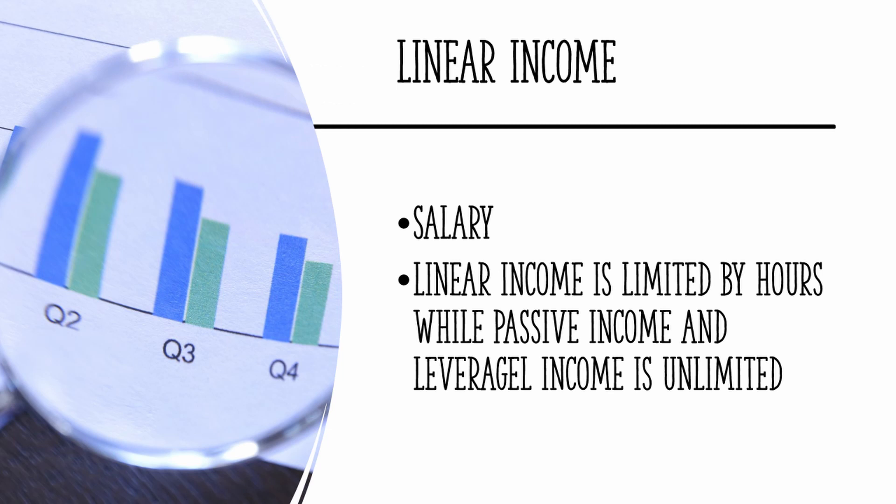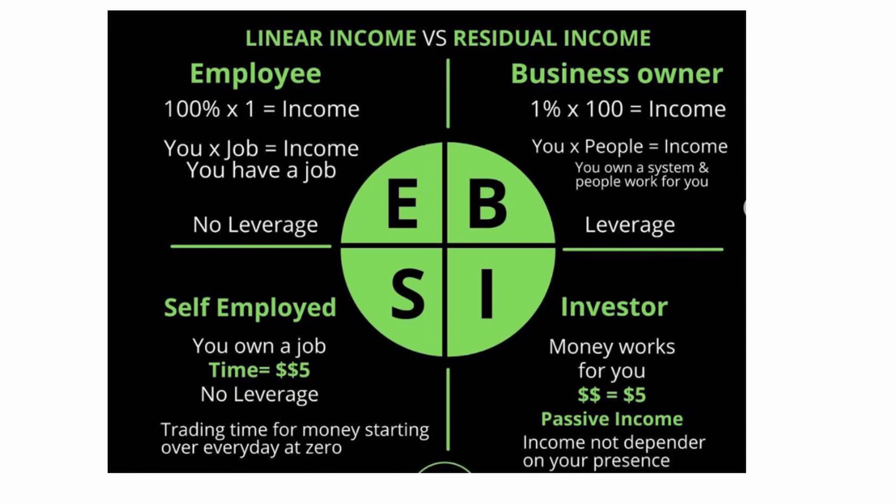What is linear income? Linear income is limited by your hours, while passive income and leverage income are unlimited. For example, if you are paid by the hour, you are limited because the number of hours you can work is maximum up to 24.